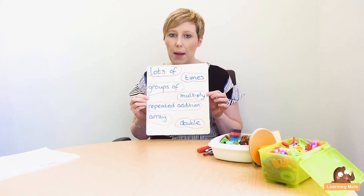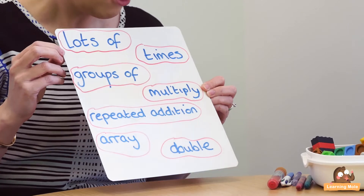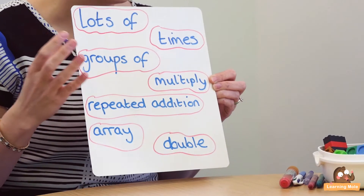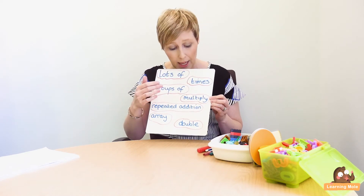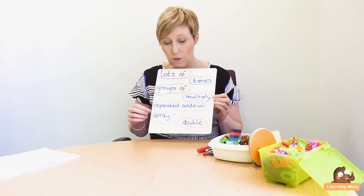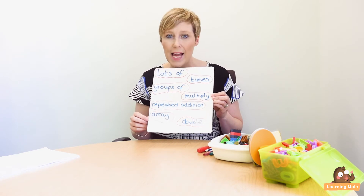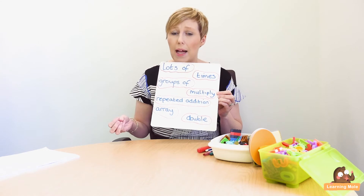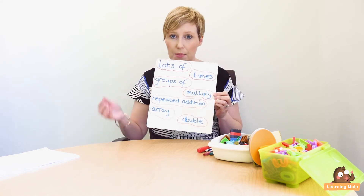At this stage, the vocabulary we will be looking at includes: lots of, groups of, times — especially when we're talking about repeated addition — multiply, repeated addition, and array. With an array, you might also be using the terms row and column, saying things like 'multiply the rows by the columns.'